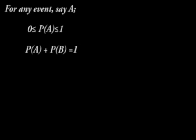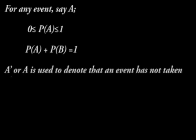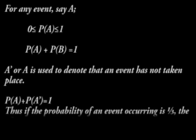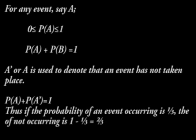For any event A, the probability P(A) lies between 0 and 1, that is, 0 ≤ P(A) ≤ 1. If the only possible events are A and B such that when A occurs B doesn't and vice versa, then P(A) + P(B) = 1. A prime (A') is used to denote that an event has not taken place. Thus, P(A) + P(A') = 1. So if the probability of an event occurring is 1/3, the probability of it not occurring is 1 − 1/3, which is 2/3.